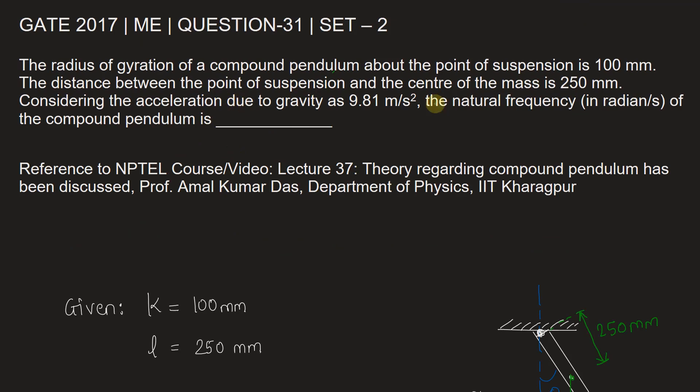Let's fill in the answer here. So the natural frequency of the compound pendulum is 15.66 radians per second.